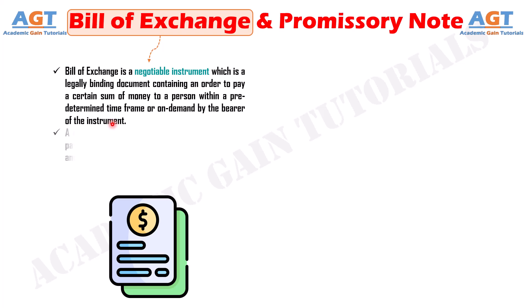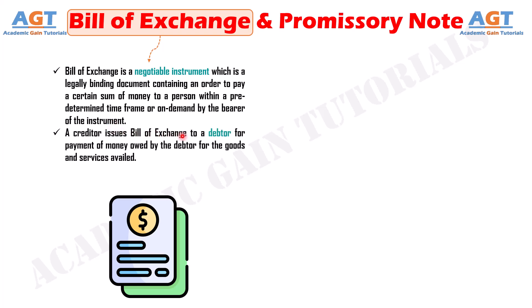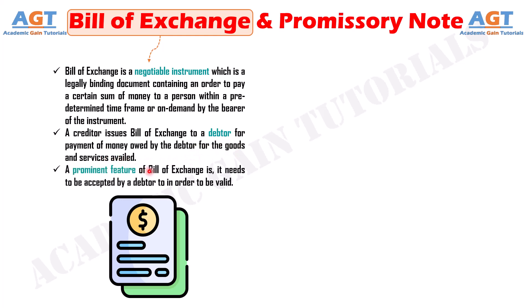A creditor issues a Bill of Exchange to a debtor for payment of money owed by the debtor for the goods and services availed. A prominent feature of Bill of Exchange is it needs to be accepted by the debtor in order to be valid.